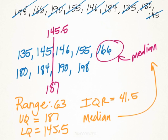So the textbook stuff, things that are going to ask you, range here will be 63. 198 minus 135 is 63. Upper quartile, we already have that as 187. Lower quartile, 145.5. Interquartile range, that's 187 minus the 145.5. It's going to give us 41.5. And the median we already have right here, 166.